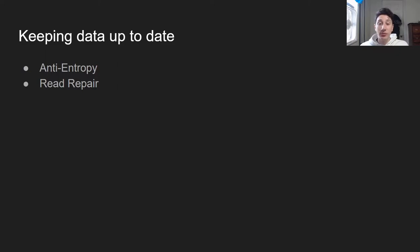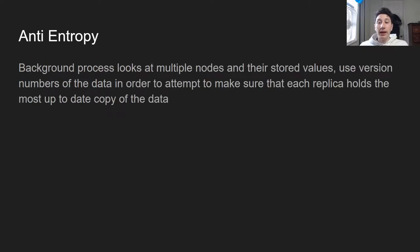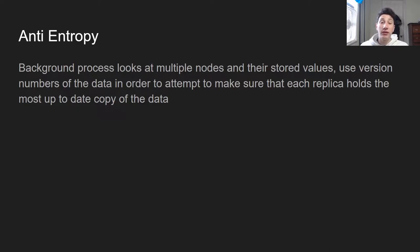The first is anti-entropy. Anti-entropy is literally just a background process that looks at multiple nodes and their stored values. Let's assume we're using a key-value store, and for every single key in the database, we're going to have a version number of how many times that key has been updated. Anti-entropy uses that background process to look at two nodes and replace the outdated values on given nodes with the more updated values it can find on other nodes.